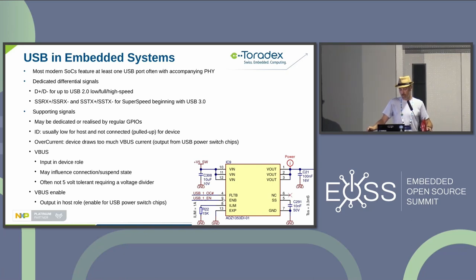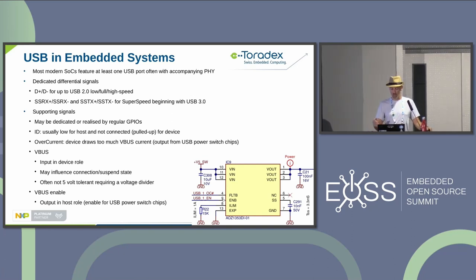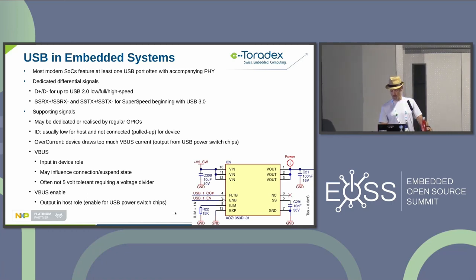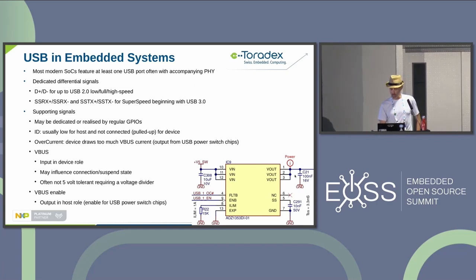There is also a VBus enable signal — when in host role you have to drive VBus to power the USB device. This usually goes through a USB power switch. The enable signal can be driven by a GPIO, and a fault/overcurrent output signals when too much power is drawn. With a 15k resistor, for example, the current limit is configured for one amp. The voltage comes in and switches through to the output.